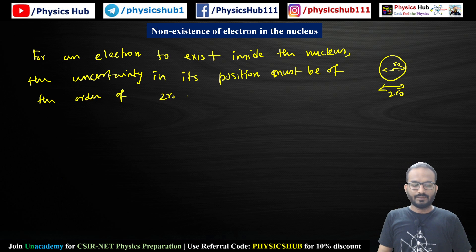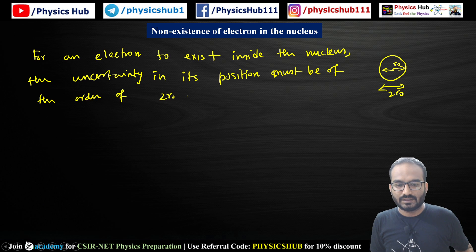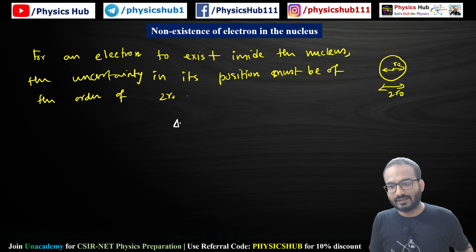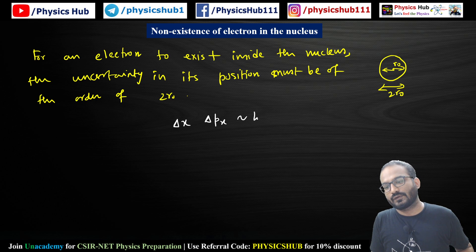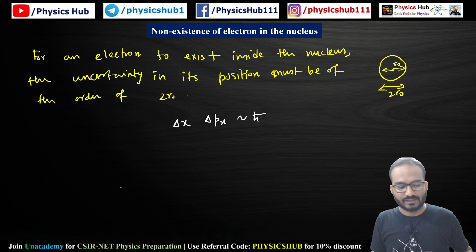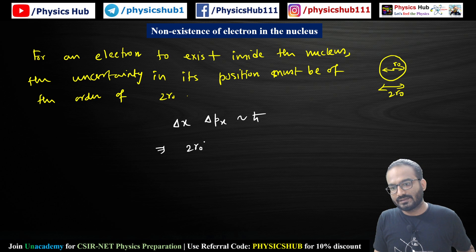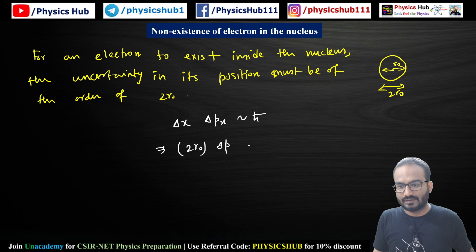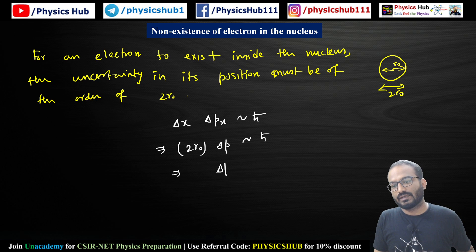Now we know the uncertainty relation: Δx · Δpₓ is approximately ħ. So Δx is here 2r₀, and therefore Δp is approximately ħ divided by r₀.